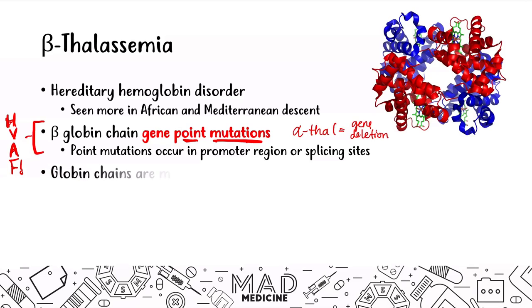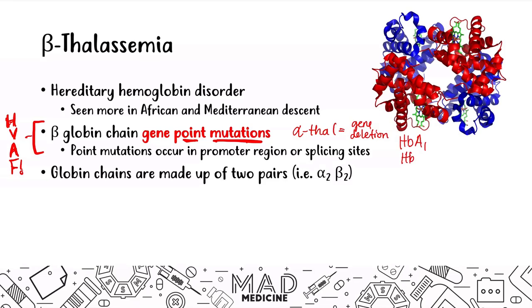Keep in mind that the globin chains are made up of two pairs, either an alpha or a beta chain. You have hemoglobin adult — hemoglobin A1, hemoglobin A2, the adult forms. You have the fetal form, hemoglobin F. And then you have forms where you don't have any alpha chain production — hemoglobin H and hemoglobin Barts.